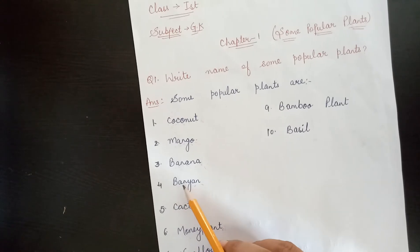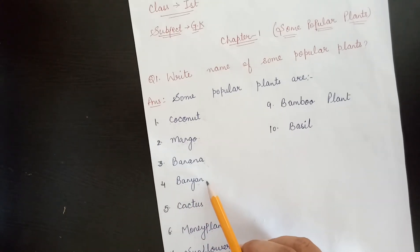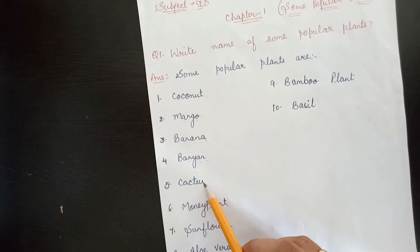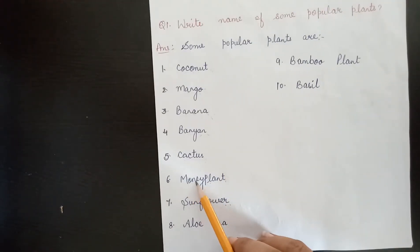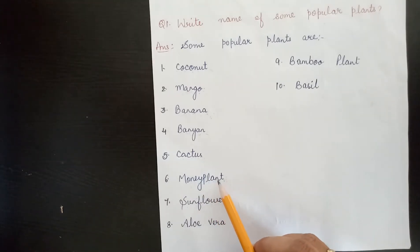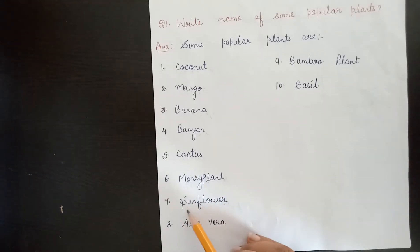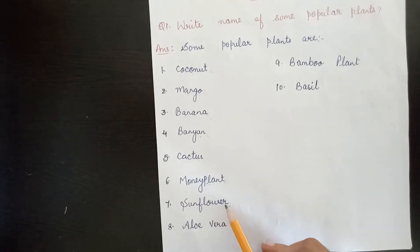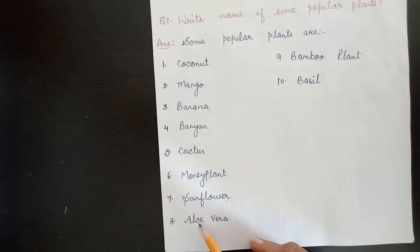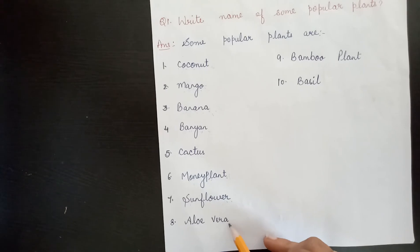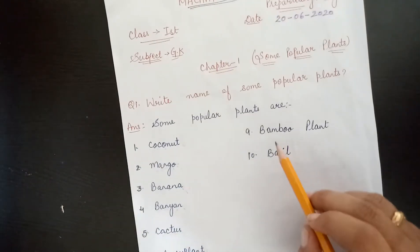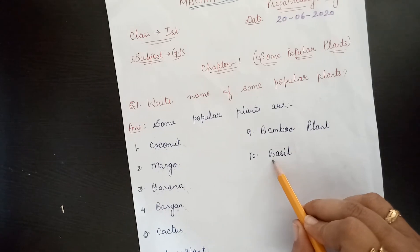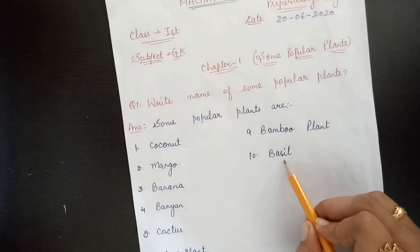Next, Banyan — B-A-N-Y-A-N. Banyan. Next is Cactus — C-A-C-T-U-S. Cactus. Money Plant — M-O-N-E-Y-P-L-A-N-T. Money plant. Sunflower — S-U-N-F-L-O-W-E-R. Sunflower. Aloe Vera — A-L-O-E-V-E-R-A. Bamboo — B-A-M-B-O-O. Bamboo plant. The last one is Basil — B-A-S-I-L. Basil.